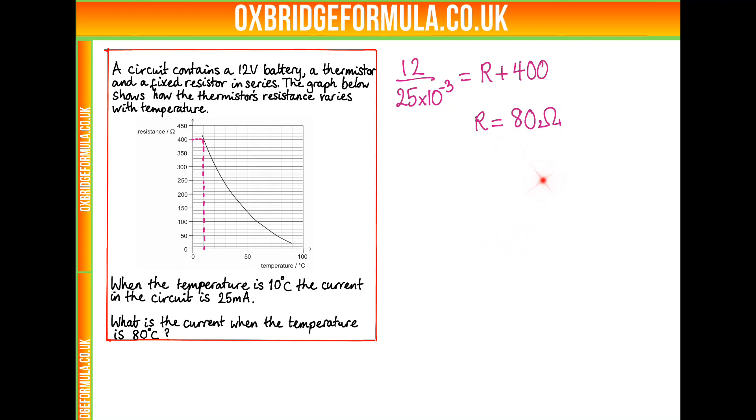So now we know R is equal to 80 ohms. It's quite simple to then work out the current when the temperature is 80 degrees. Because we know that when the temperature is 80 degrees, then we have a 40 ohm thermistor. So the total resistance will be 80 plus 40.